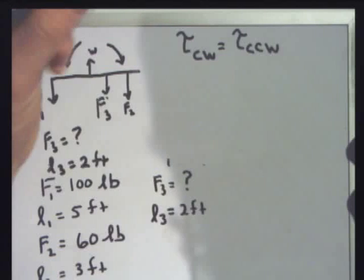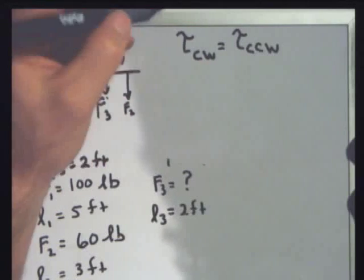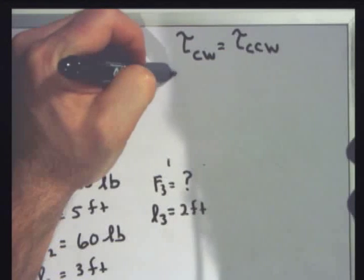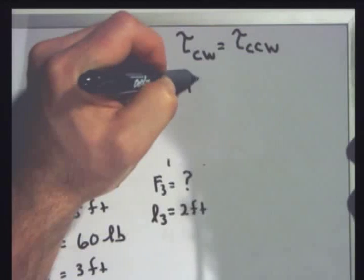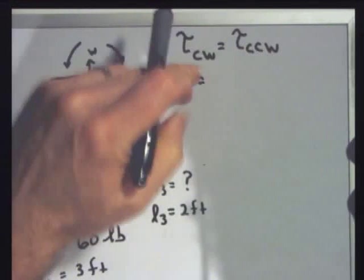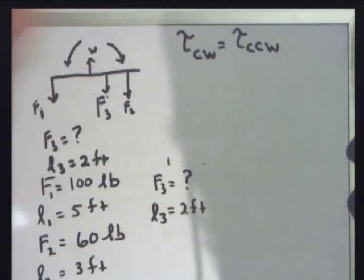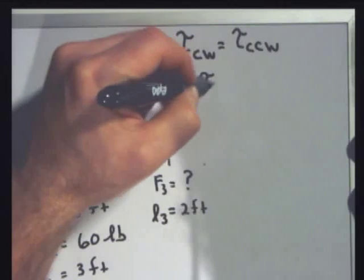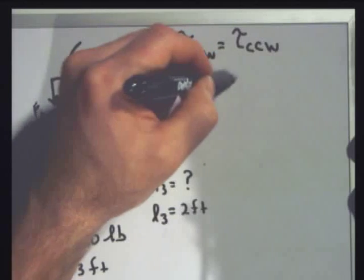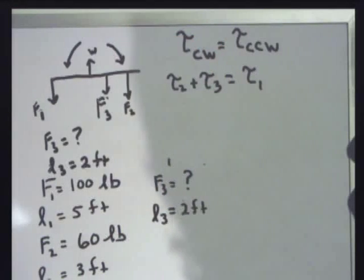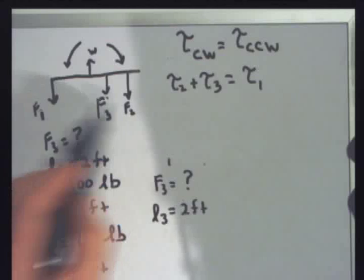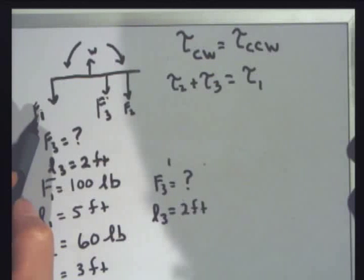Now, what I can do is I know that torque is force times moment arm. So I can replace torque with force times moment arm. So on the clockwise side, well, let's see. First I'll say on the clockwise side, I've got torque 1. On the counterclockwise side, on the clockwise side, I've got torque 2 plus torque 3. On the counterclockwise side, I've got torque 1, right? Counterclockwise side. These two torques balancing this torque on the counterclockwise side.